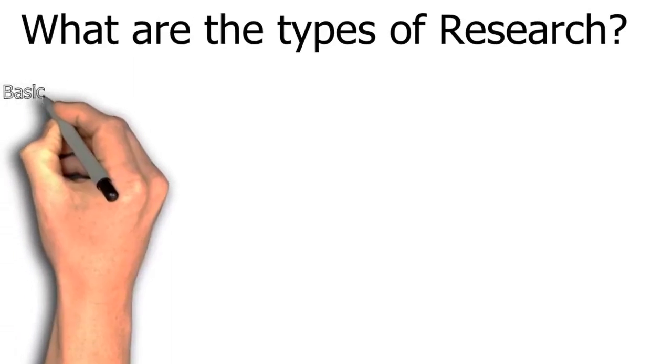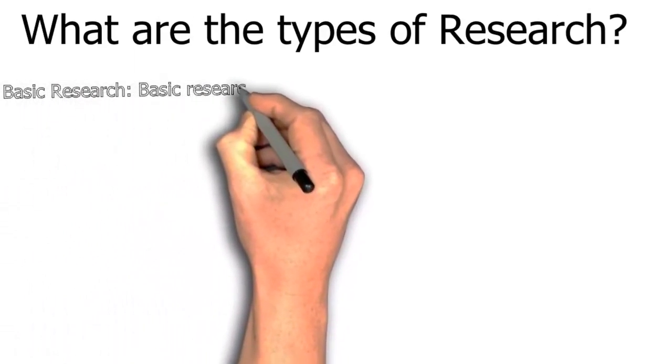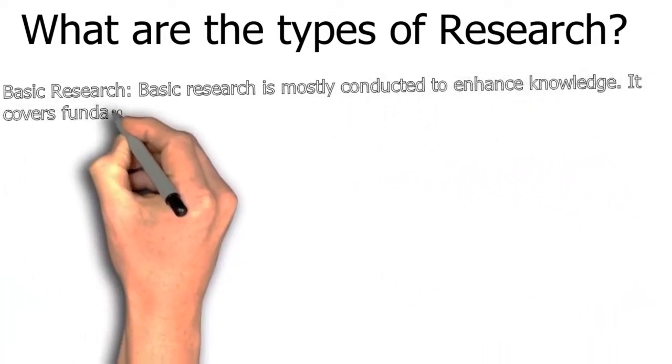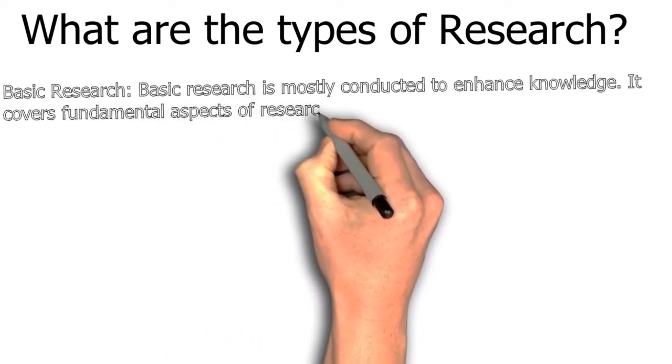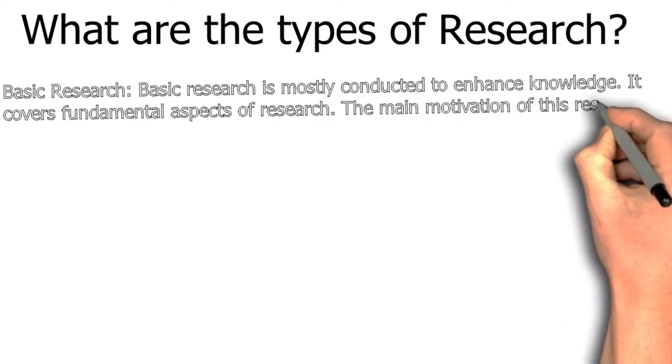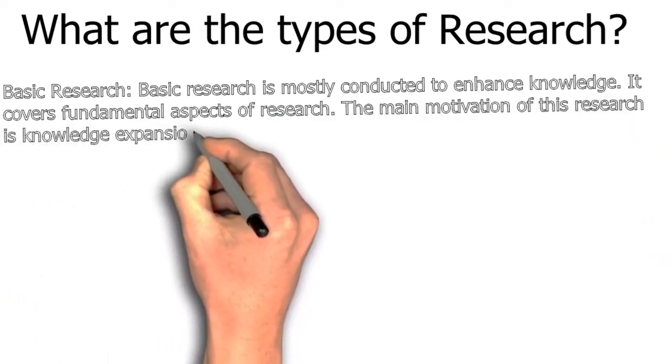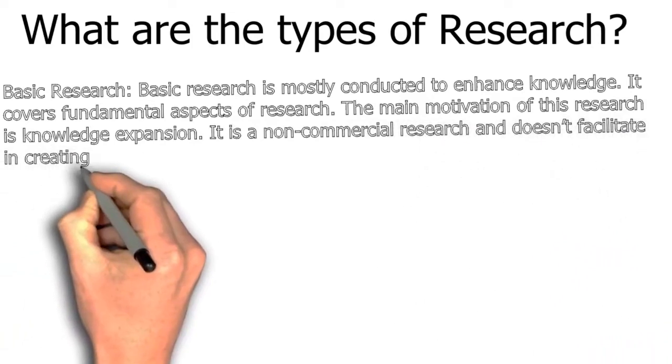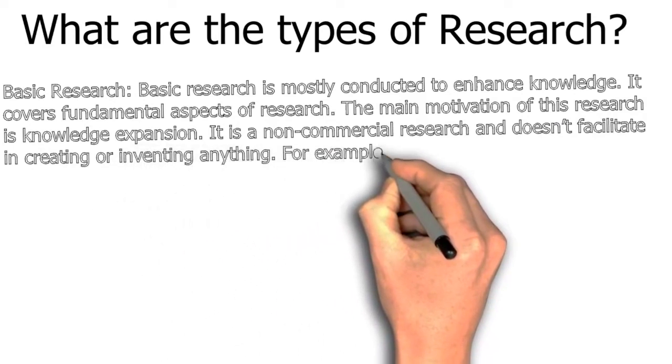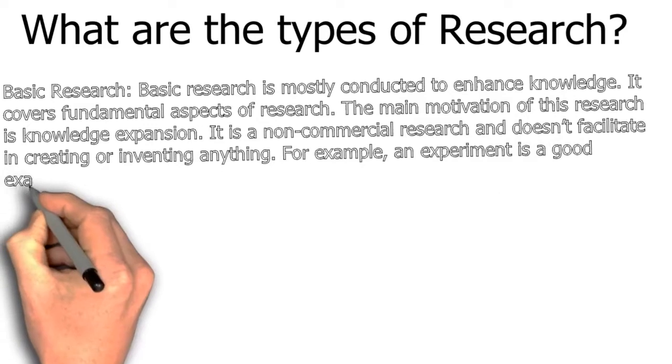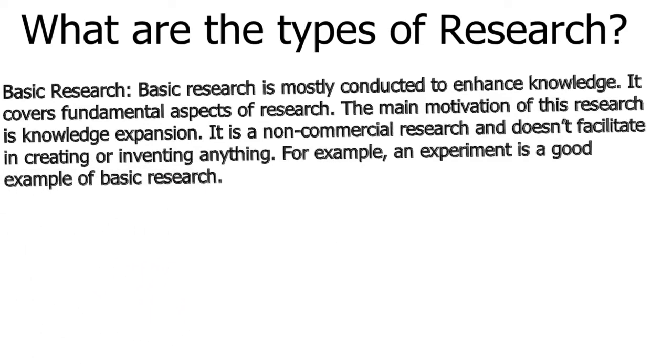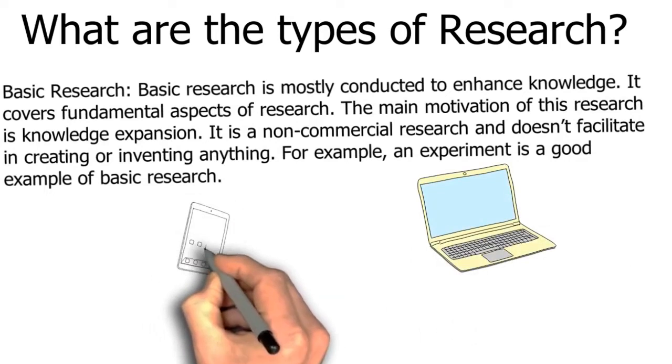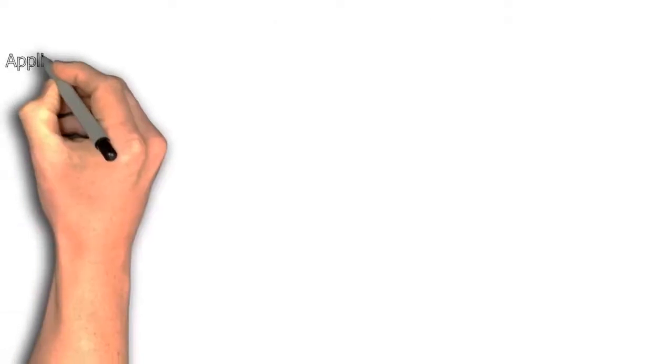What are the different types of research? Research has a wide variety of forms. Basic research is mostly conducted to enhance knowledge. It covers functional aspects of research. The main motivation is knowledge expansion. It is non-commercial and doesn't facilitate in creating or inventing anything. For example, an experiment where we conduct something and try to find out the result is a simple exercise of basic research.